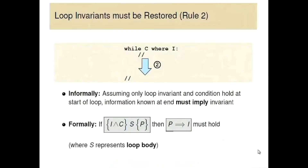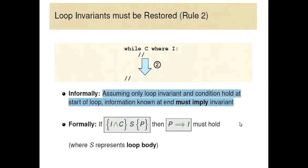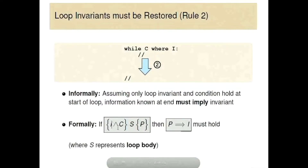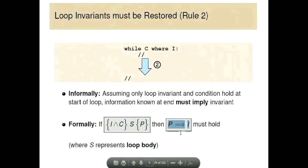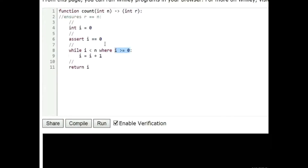So this is the hard case. Rule two is the hard one. Rule three is not really a rule, it's just a thing. What I've written here in English: assuming only the loop invariant and condition hold at the start of the loop, then what we know at the end of the loop must imply the loop invariant. So if i and c imply p after statement s, then it must be true that p implies i. It doesn't have to be that p is exactly the same as i, but p must imply i. That's the key thing. It's kind of weird.